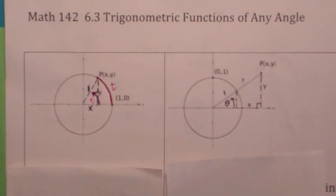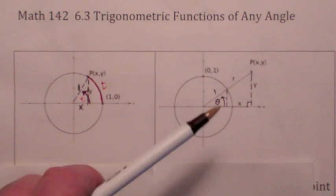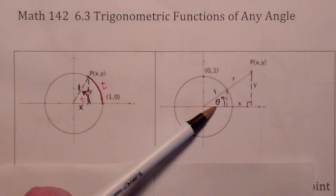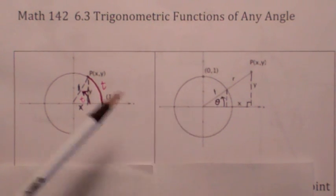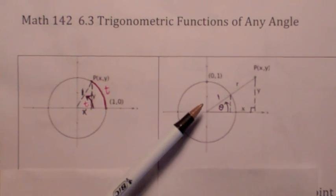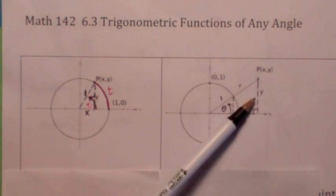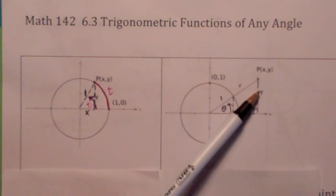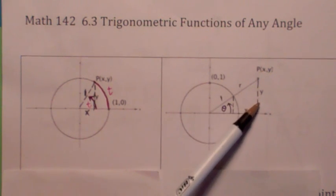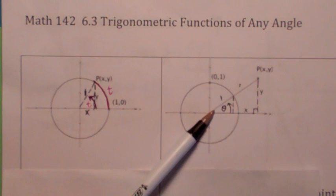Then we talked about right triangle trig, which is really a special case of what we were just looking at. When you have a right triangle, the angle theta is an acute angle — between zero and 90 degrees, or zero and pi over two. In the first quadrant, the sine of theta is opposite over hypotenuse, which would be y over r.